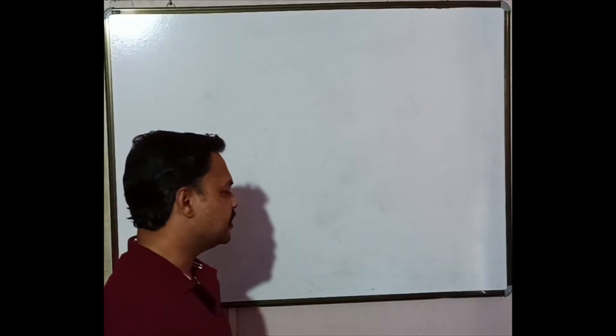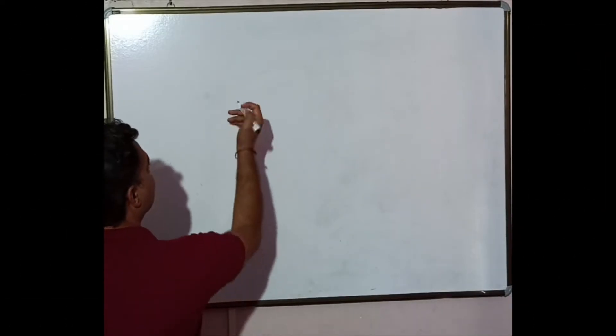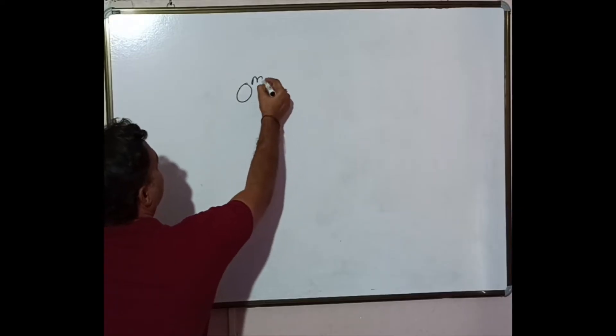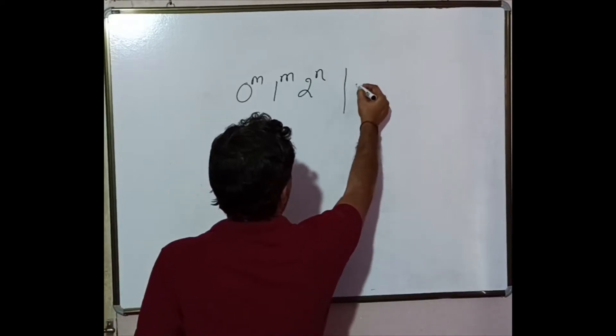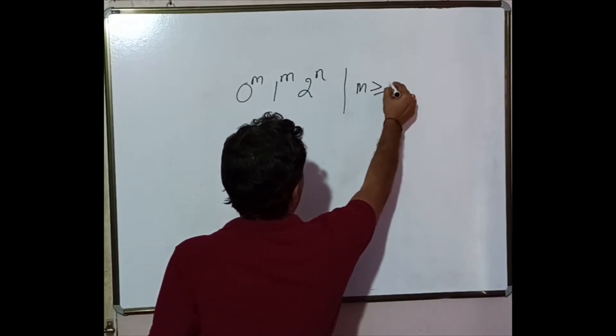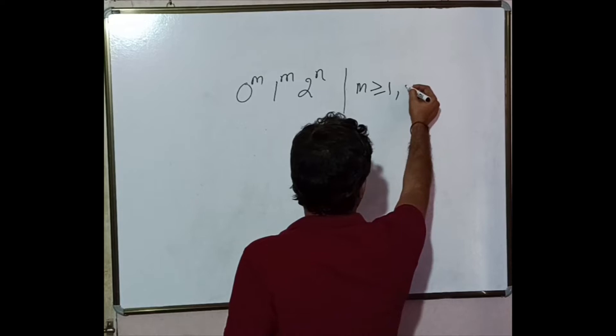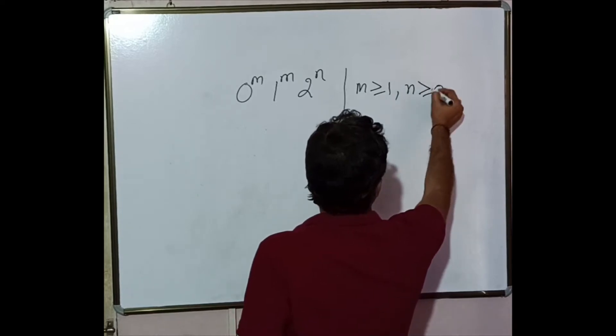And the problem statement is: 0 to the power m, 1 to the power m, 2 to the power n, such that m greater than or equal to 1 and n greater than or equal to 0.